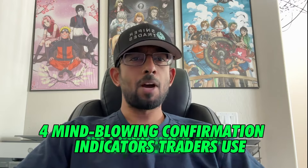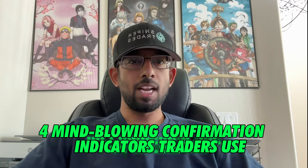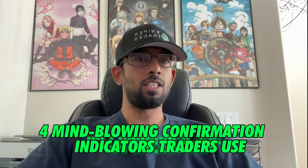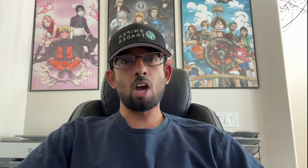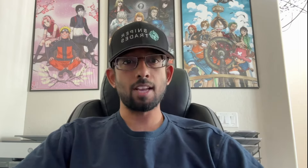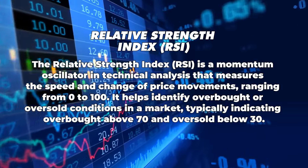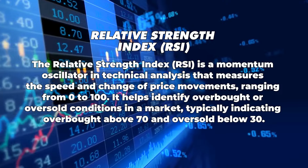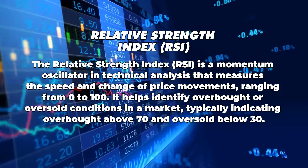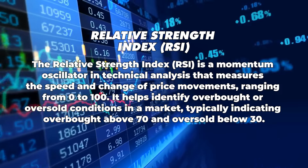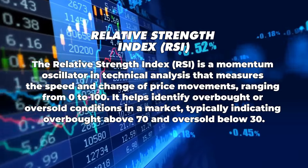We are in a four-part series about confirmation indicators that traders use to enter and exit trades. In our last video, we talked about volume price action analysis, where we use volume and price as our confirmation indicators. This week, I'm going to talk about the RSI — the Relative Strength Index — a momentum oscillator that traders use to identify general trends, potential reversals, or oversold and overbought conditions.